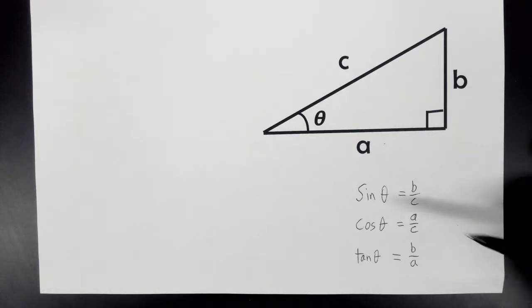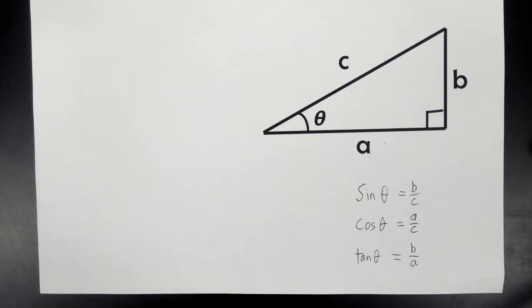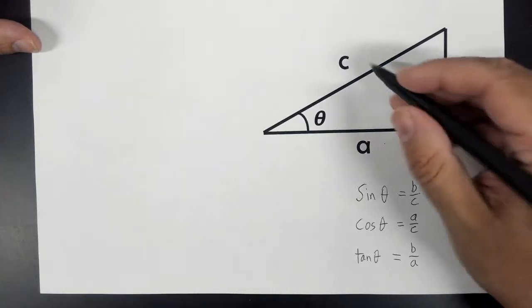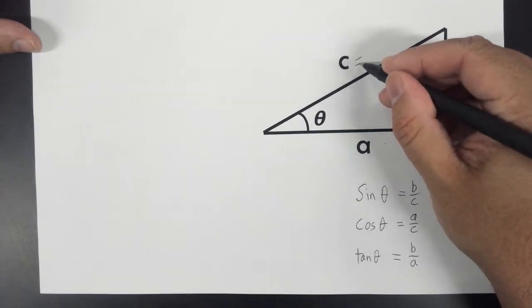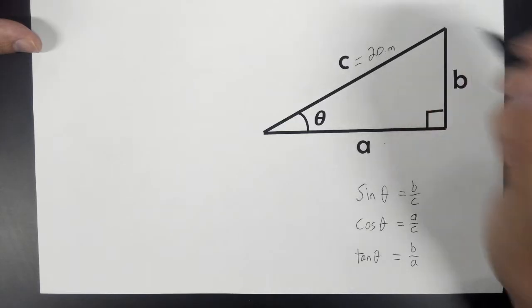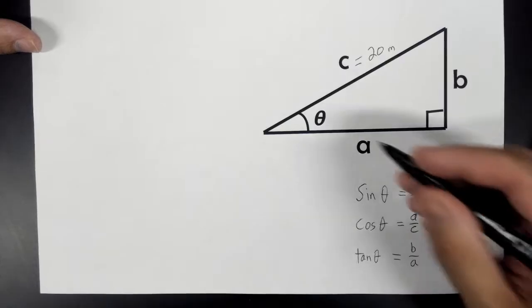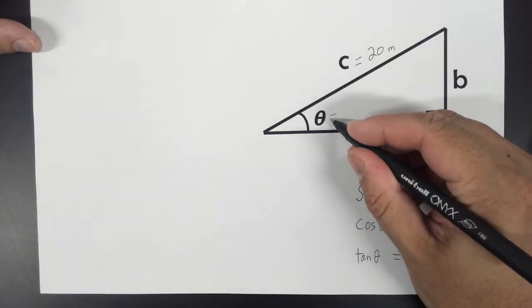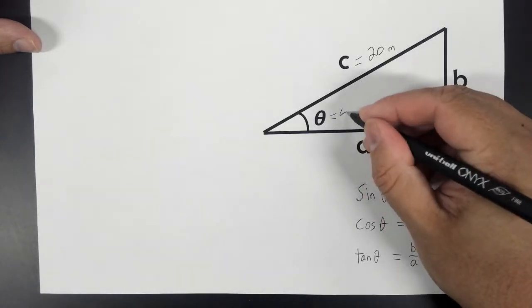Sine, cosine, and tangent can be used to find missing sides of a triangle if we know enough information. Let me give you an example. Let's say that we know that this side is 20 meters, and we know that this angle is 40 degrees.